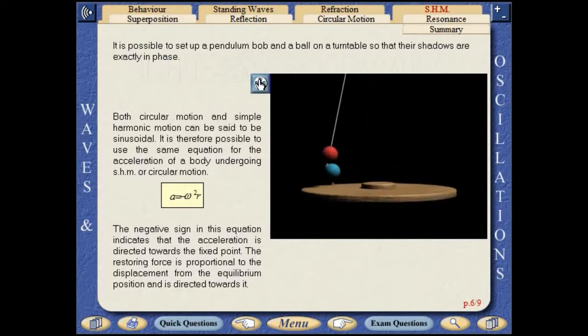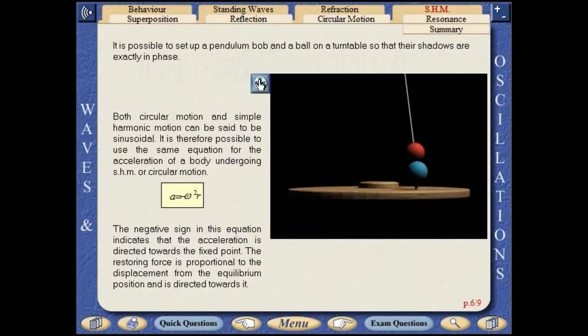The negative sign in this equation indicates that the acceleration is directed towards the fixed point. The restoring force is proportional to the displacement from the equilibrium position and is directed towards it.